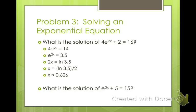What about this one? What did you do first? Subtract 5. And then, in order to bring that 3x down, multiply both sides by natural log. Natural log and e cancel each other. So you have 3x equals natural log 15. Divide by 3. Plug it into your calculator. You should get an answer.